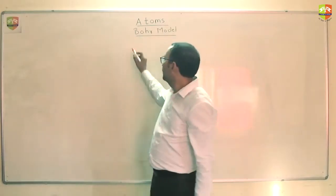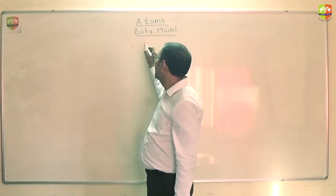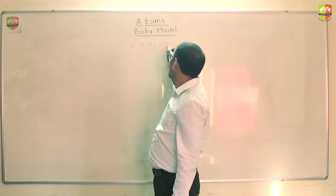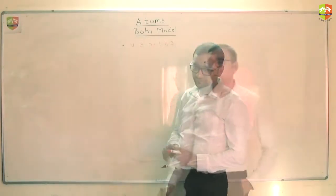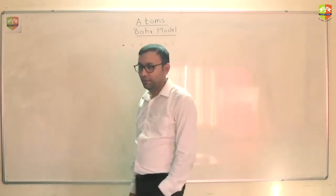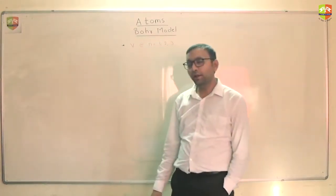Find out velocity at n equal to 1, 2 and 3 level. For that you need to know velocity as a function of n. From where you can derive?